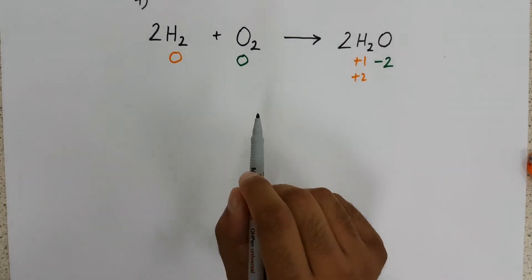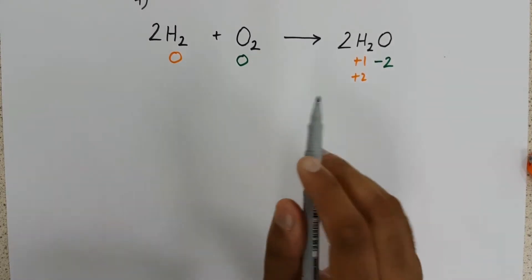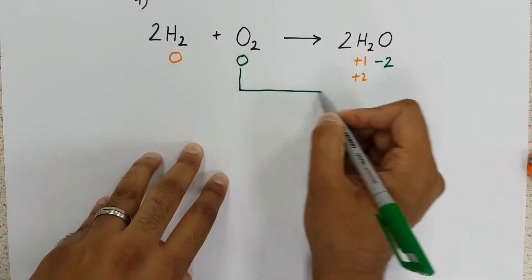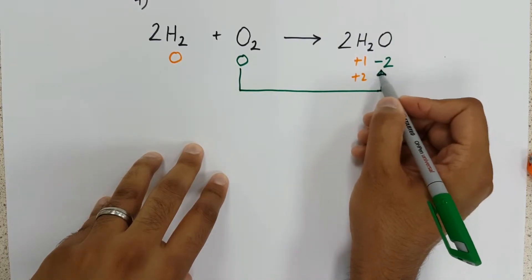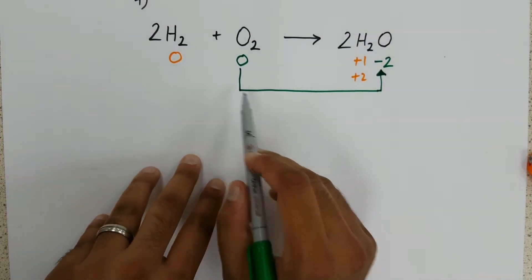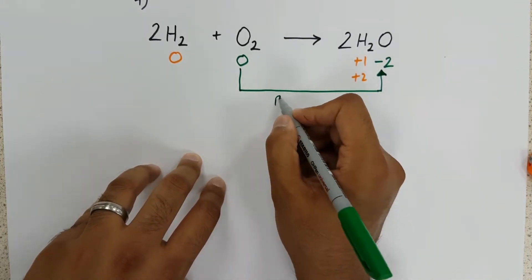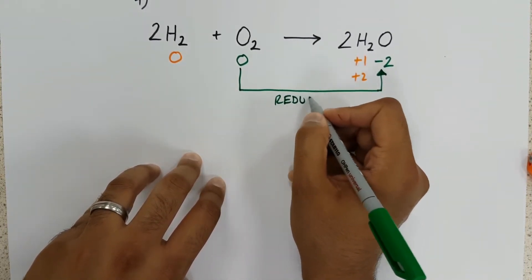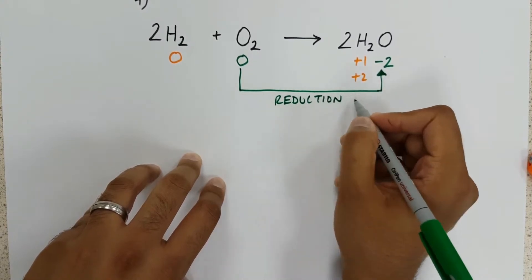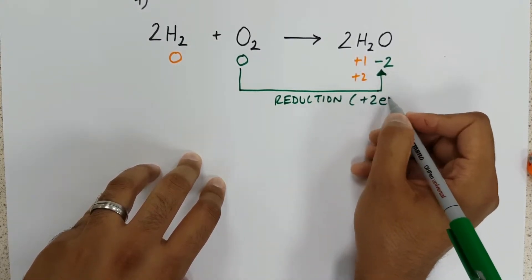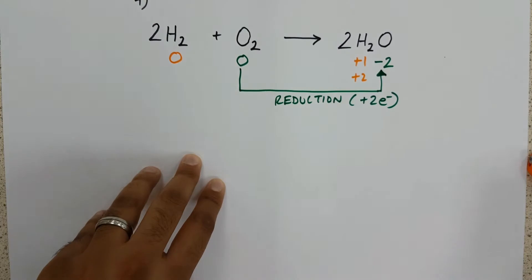There are no spectator ions because both species react. So if we draw our construction lines, our redox lines, from O₂ to O²⁻, we have gained electrons, which signifies a reduction reaction. And to be clear, we are gaining two electrons per oxygen.